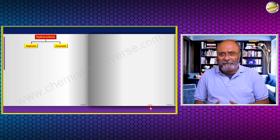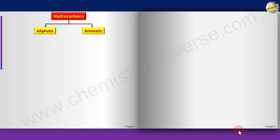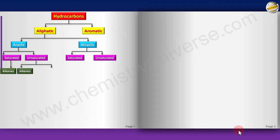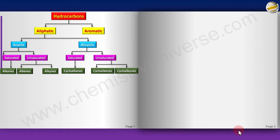Aliphatic hydrocarbons are broadly divided into acyclic and cyclic (alicyclic). Acyclic compounds are further divided into saturated and unsaturated; alicyclic ones are similarly divided. The saturated acyclic aliphatic hydrocarbons are alkanes, and the unsaturated acyclic ones are alkenes and alkynes. In the cyclic category, saturated compounds are cycloalkanes and unsaturated ones are cycloalkenes and cycloalkynes.